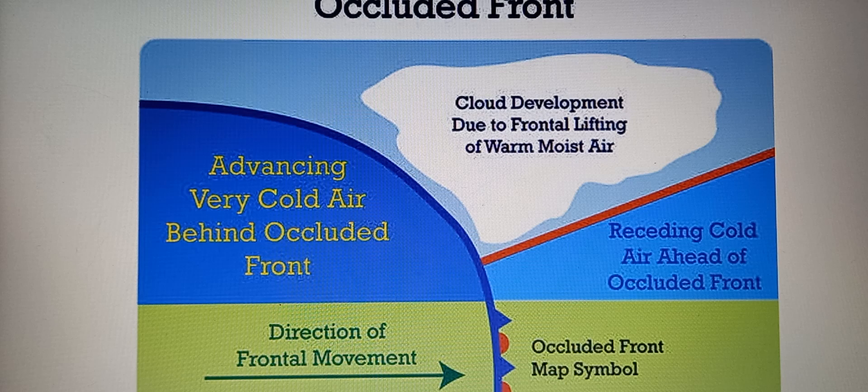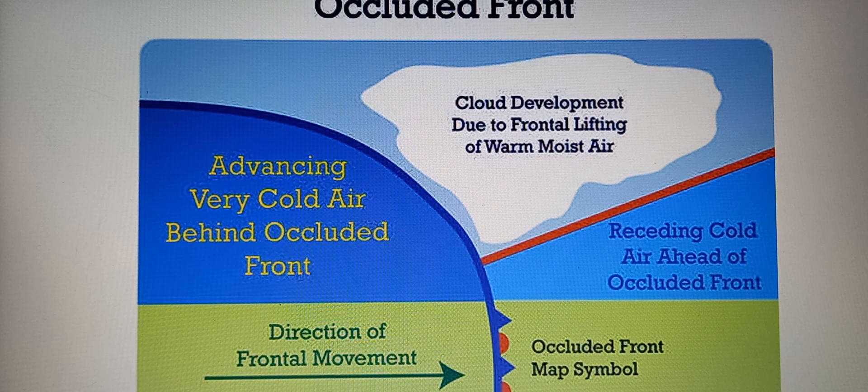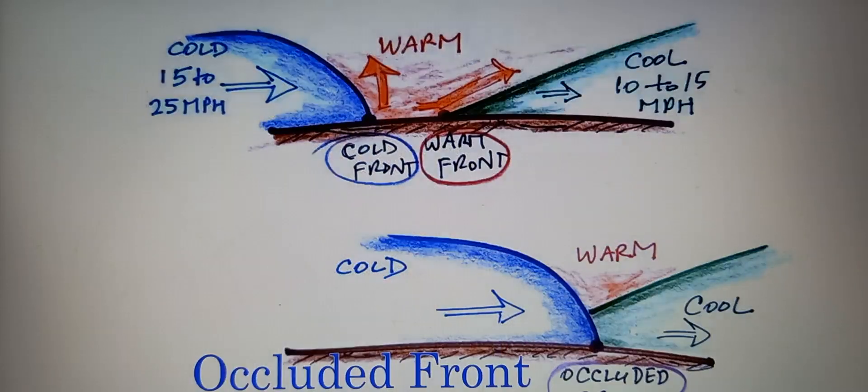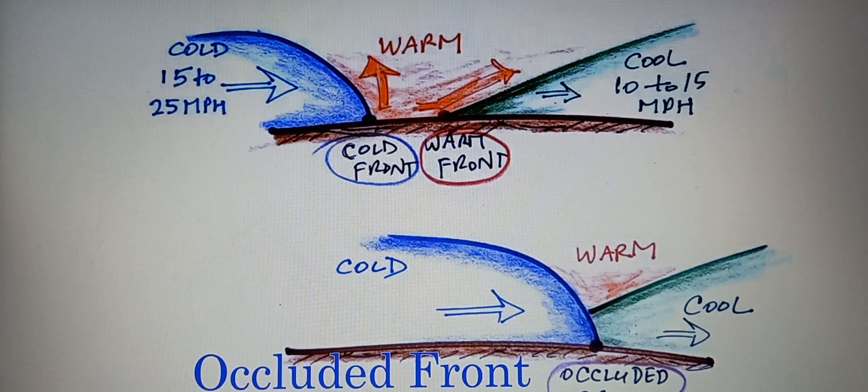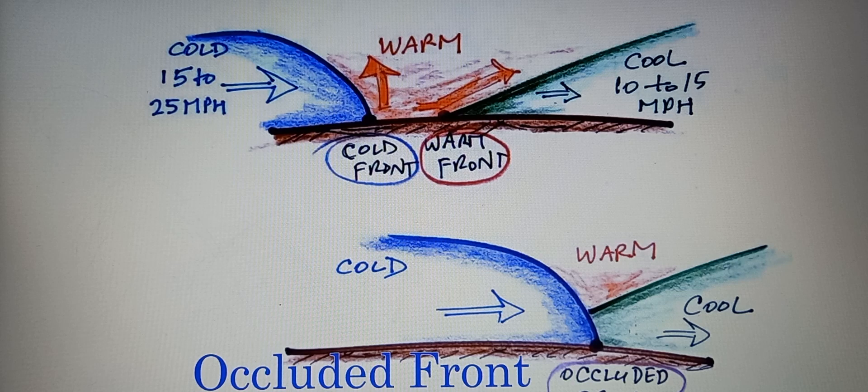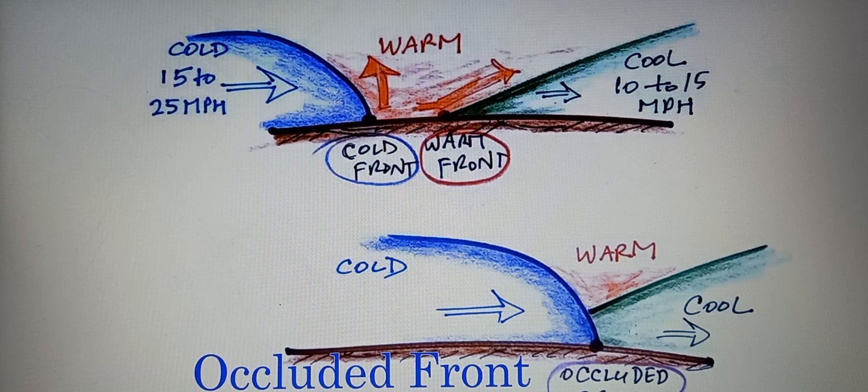A faster-moving cold front overtakes a slower-moving warm front or catches up to a stationary front. It involves three air masses: cold, cool, and warm. Occluded fronts are symbolized on a weather map with alternating purple semicircles.